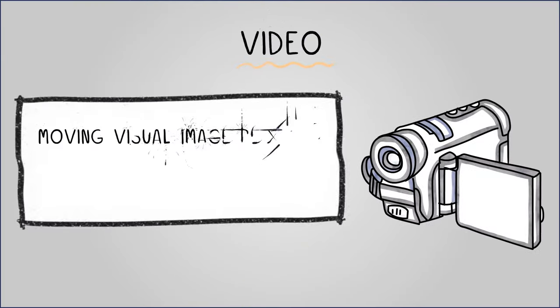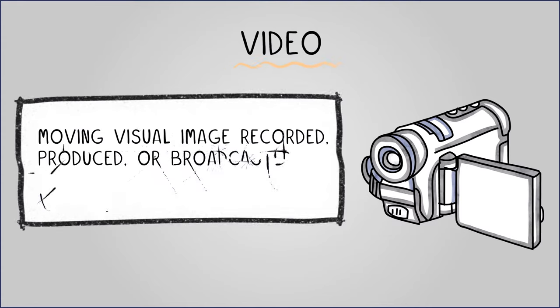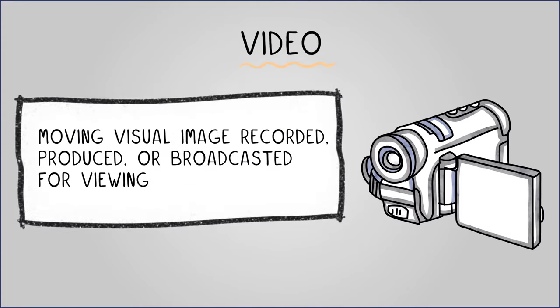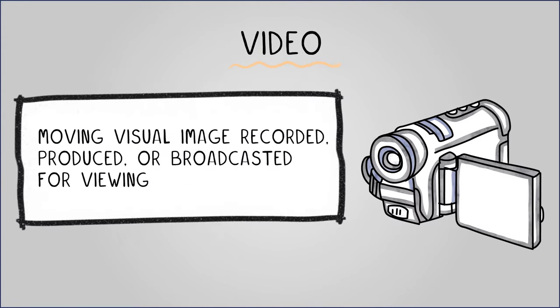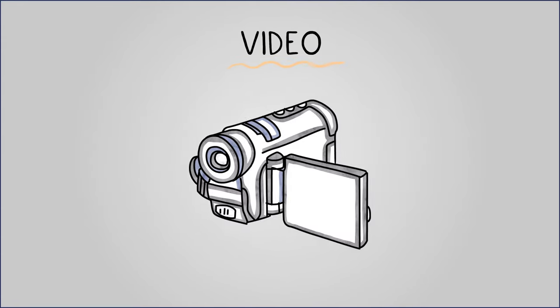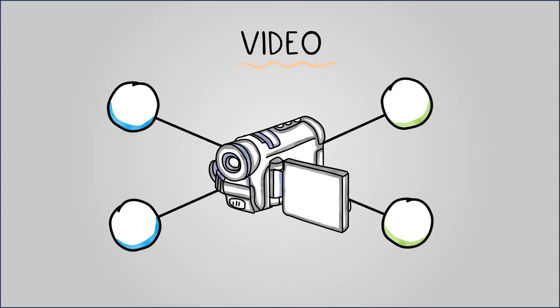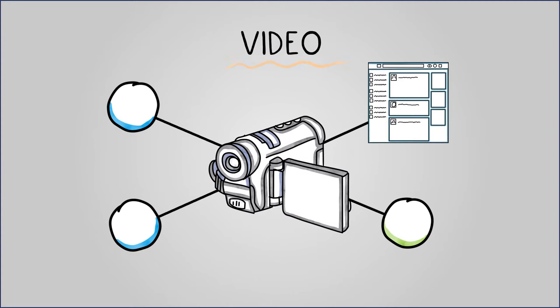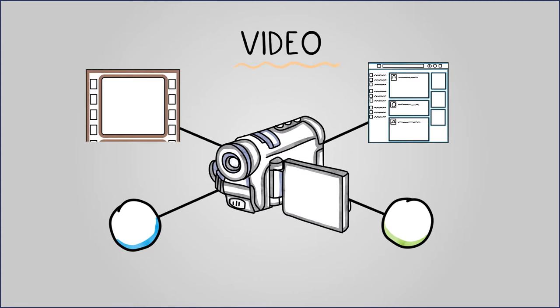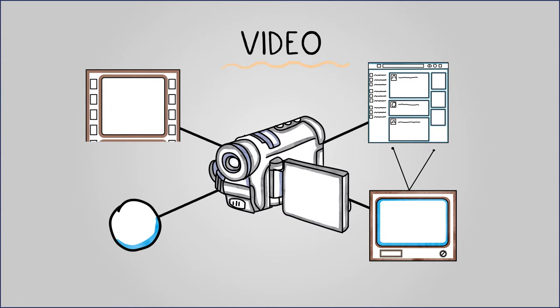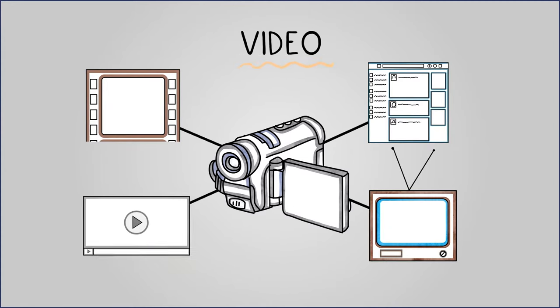Video, defined as any moving visual image recorded, produced or broadcasted for viewing, encompasses various products like online and social media videos, movies, TV programs, and internet advertisements.